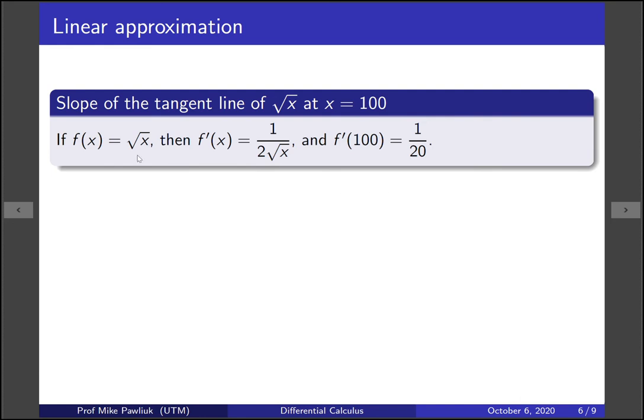So if f of x is the square root function the derivative is 1 over 2 root x. We'll see this a little bit later in the course but for now take it for granted. And if you plug in a hundred at that derivative it's 1 over 20.